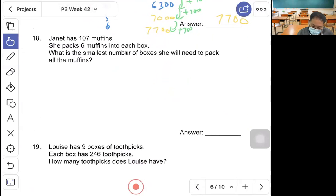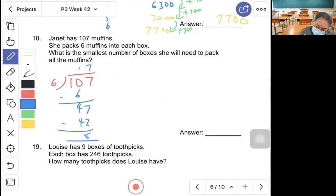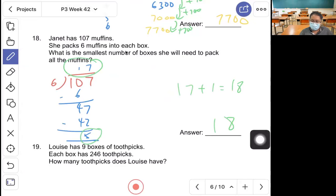Question 18, Janet has 107 muffins. She packs 6 muffins in each box. What is the smallest number of boxes she will need to pack all the muffins? 107 divided by 6, you get 17 remainder 5. It's not 17, you need to have one more box. So 17 plus 1, 18 boxes are required to pack all the muffins.